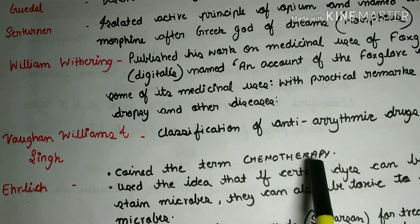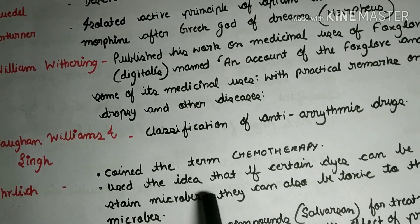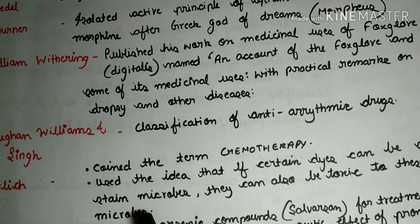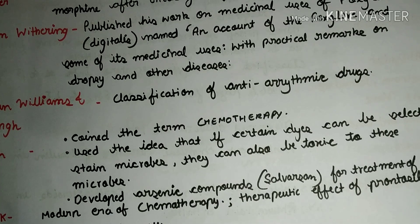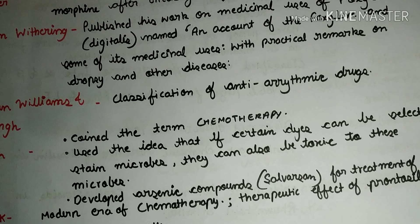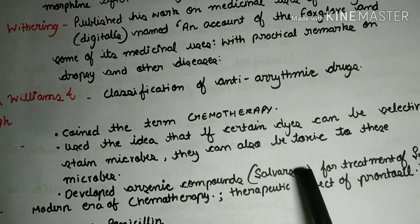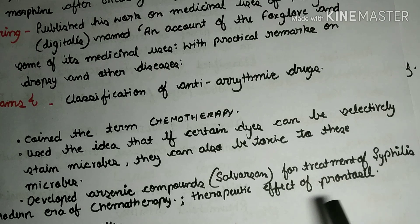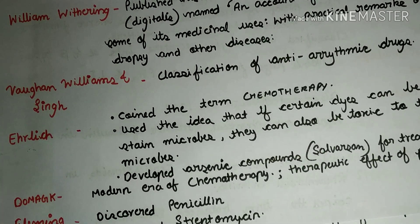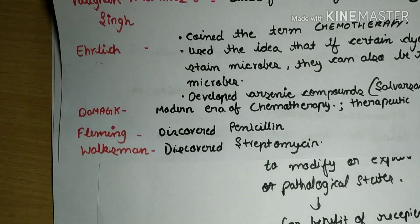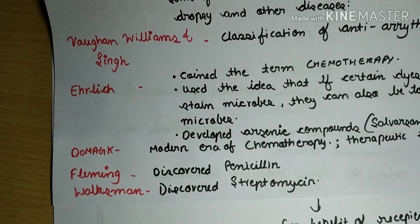Ehrlich coined the term chemotherapy. He used the idea that if certain dyes can selectively stain microbes, they can also be toxic to those microbes. Ehrlich developed arsenic compounds for the treatment of syphilis, and that arsenic compound is Salvarsan. Domagk introduced the modern era of chemotherapy and demonstrated the therapeutic effect of prontosil in pyogenic infections. Alexander Fleming discovered penicillin, and Waksman discovered streptomycin.